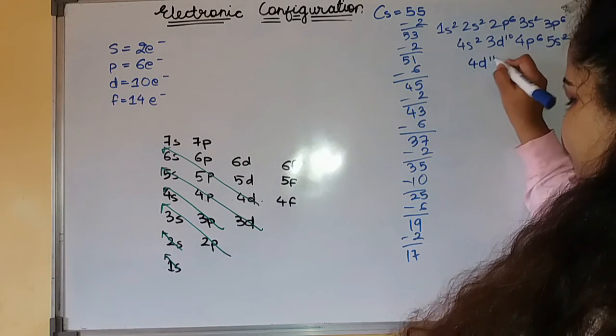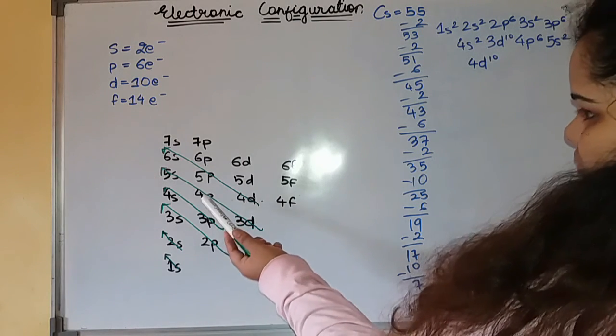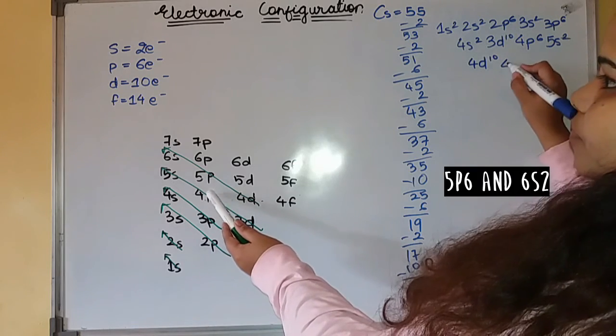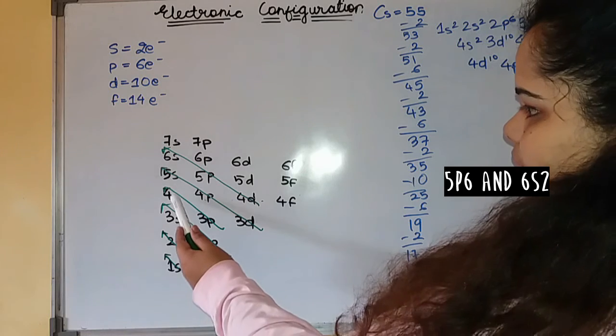4d will incorporate 10. So you are remaining with 7. 4p will incorporate 6. 1 is remaining.